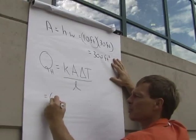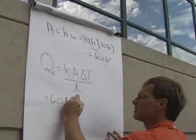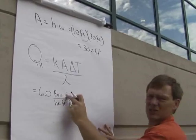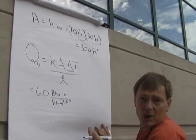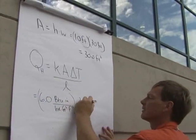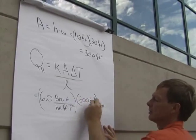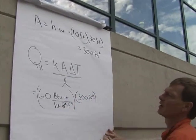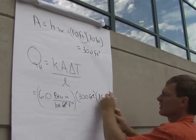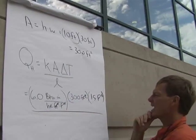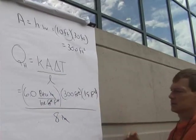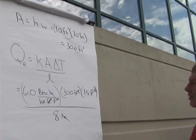That's 6.0 BTU·inches per hour·foot squared·Fahrenheit degree, times an area of 300 square feet — the square feet cancel — times 15 Fahrenheit degrees — Fahrenheit degrees cancel — divided by a thickness of 8 inches — and the inches cancel. What a joy!